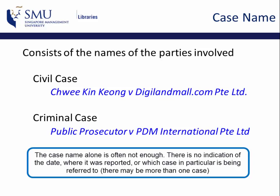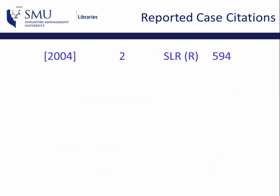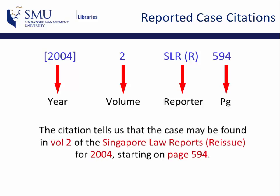Sometimes, the case name alone is often not enough to locate the correct case law. Hence, you need the rest of the citation, which includes the information of the year when the case was reported, the volume, and the name of the reporter, as well as the page number. This citation tells us that the case can be found in Volume 2 of the Singapore Law Reports Reissue for 2004, starting on page 594.